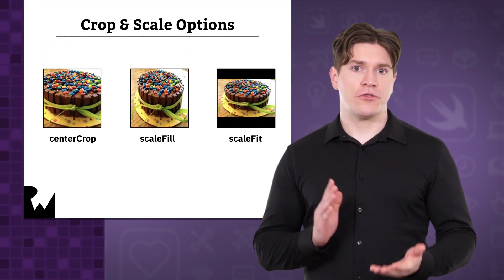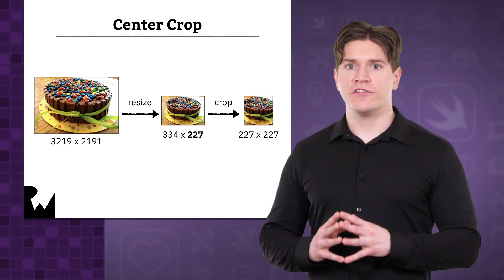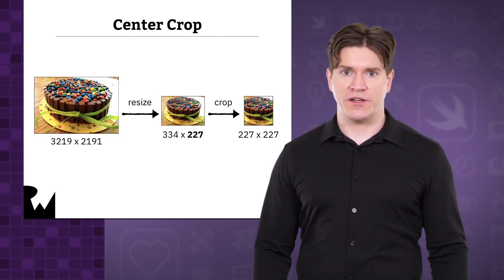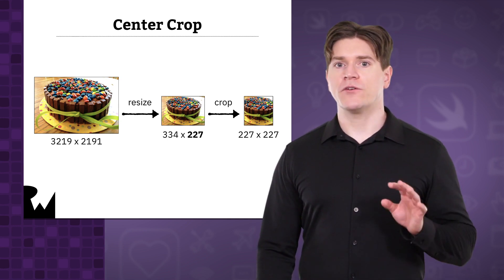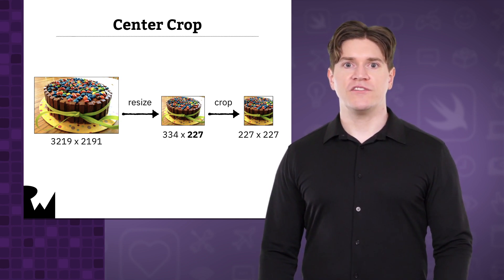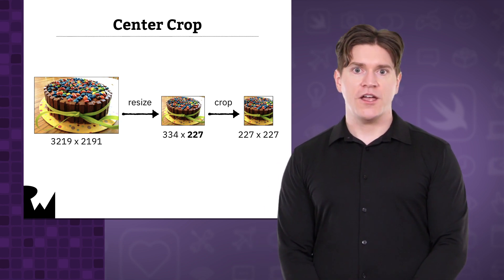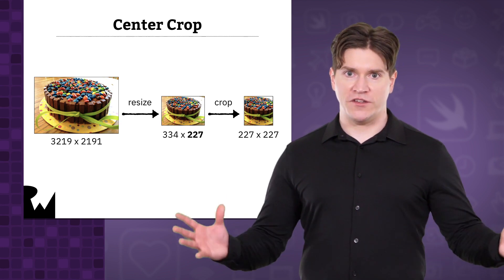Vision is going to scale your image to the correct size for you, but you need to choose the method that's going to work best, and that depends on how your model was trained. When training happens, a model is shown many different example images to learn from, and they'll all need to be sized down to the same resolution. Ideally, you'll know what image crop and scale option was used and match that in your VisionCoreML request. The center crop option first resizes the image so that the smallest side is the required pixel dimension, and then it crops around the center square. Unless the image is square to begin with, pixels from two edges will be discarded, so it's essential that the object of interest is in the center of the image.